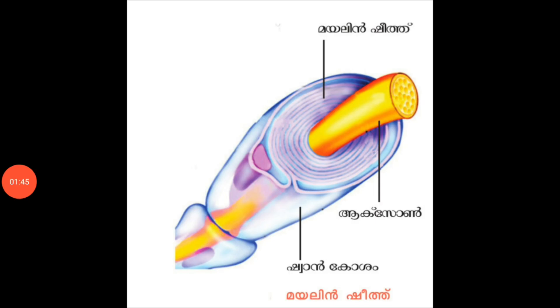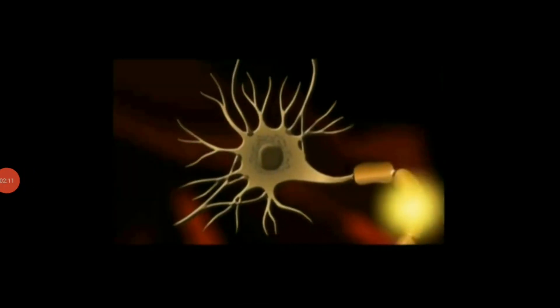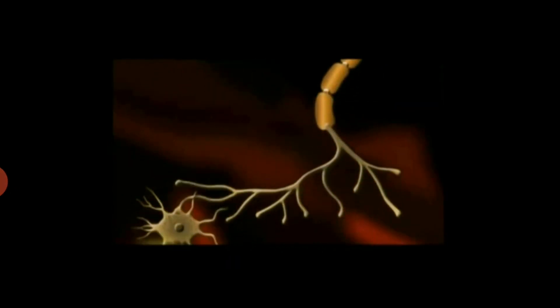Now how is this myelin sheath formed? In the picture it is very clear that Schwann cells or oligodendrocytes repeatedly encircle or repeatedly cover the axon, and thus form a membrane around the axon. That membrane is called myelin sheath. You can see the covering around the axon in the video — that is called myelin sheath.